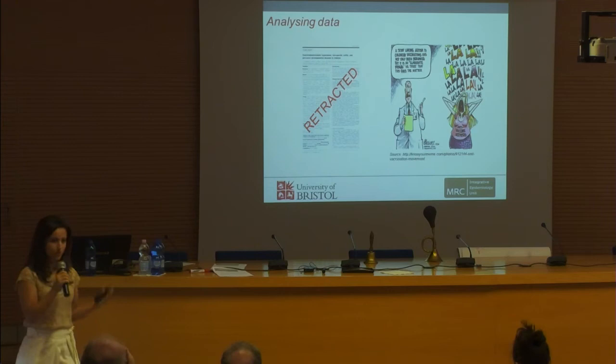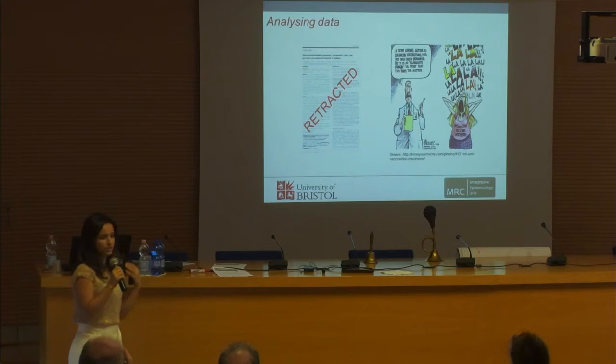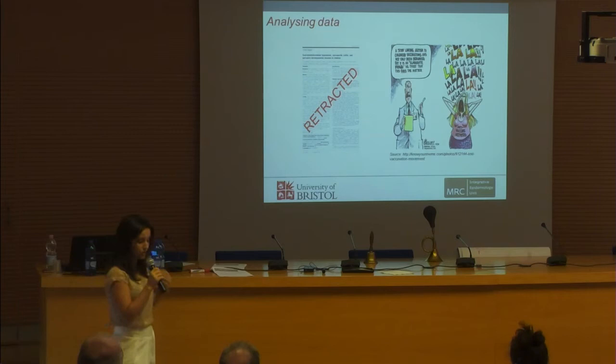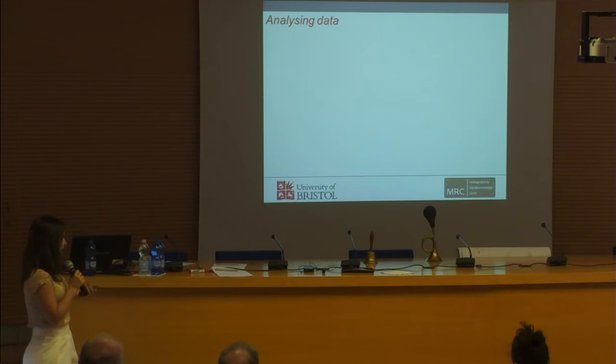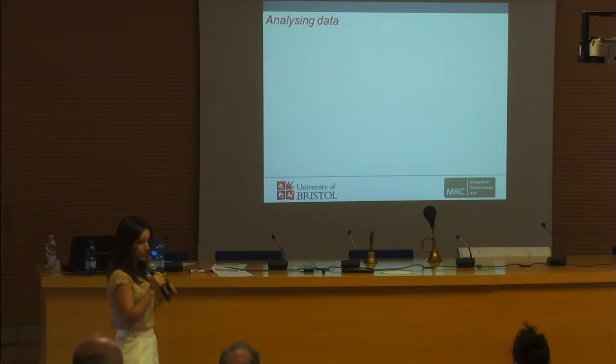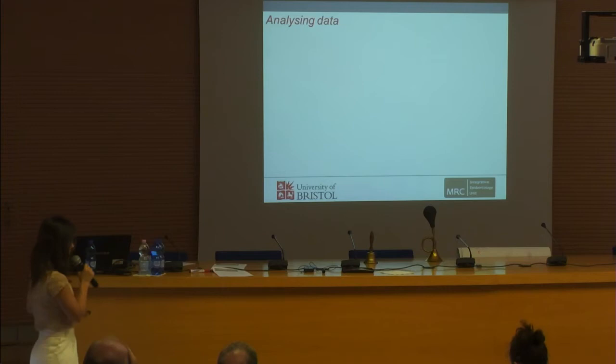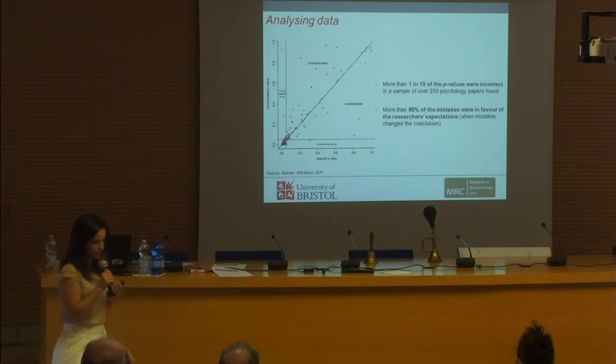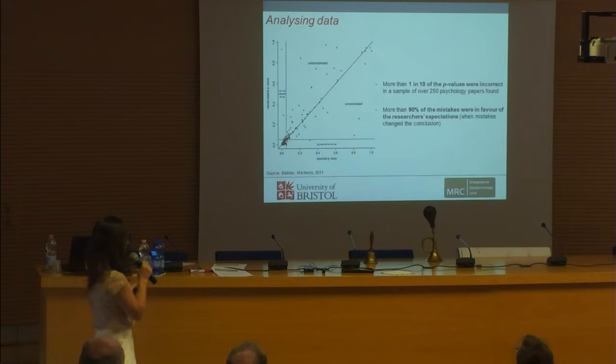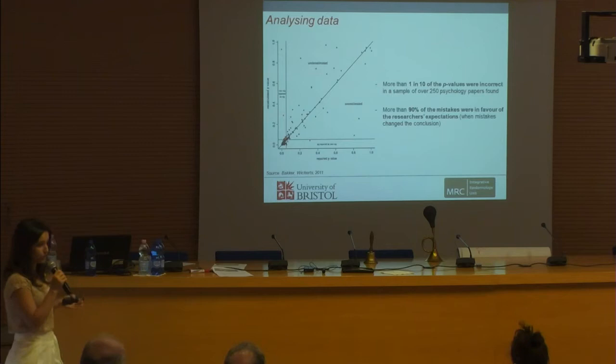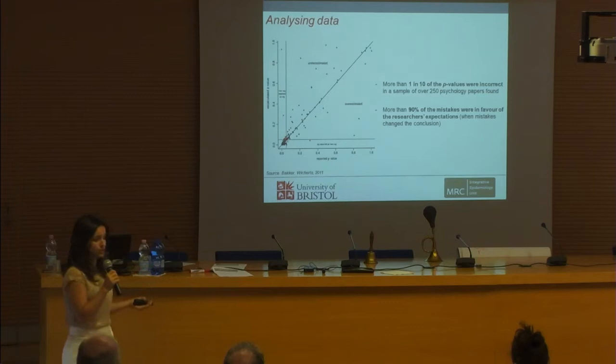However, we should also think about more subtle forms of scientific misconduct that could have a much more detrimental impact because they are so widespread. I will focus on misusing p-values, one of the most common things we see in the literature. This can come as simple statistical errors. One paper analyzed 250 papers from the psychology literature and found that 10% of reported p-values were incorrect — inconsistent with the test statistics.